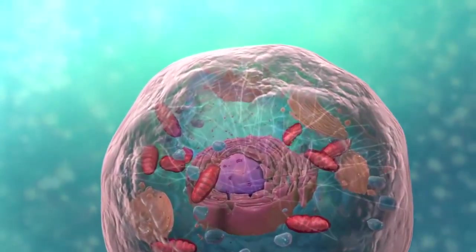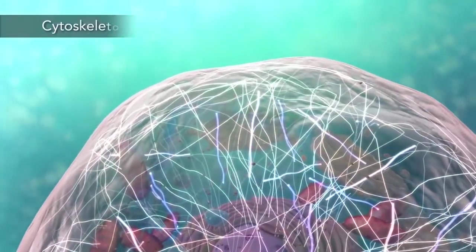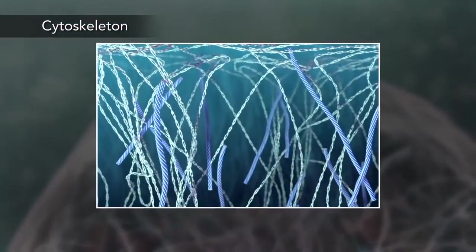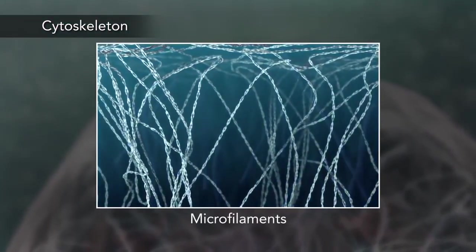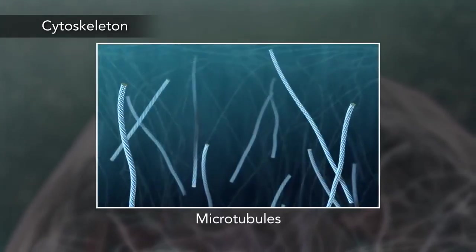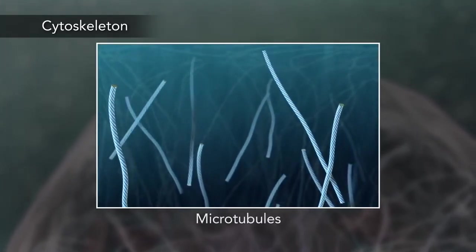Meanwhile, the cell maintains its shape through a cytoskeleton. The cytoskeleton includes the thread-like microfilaments, which are made of protein, and microtubules, which are thin, hollow tubes.